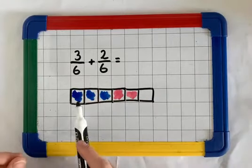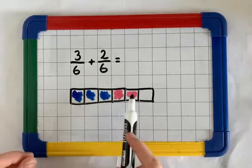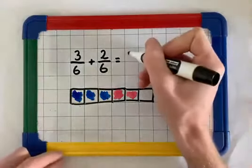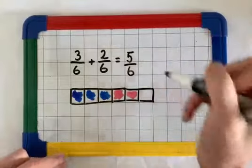You can see that we've got 1, 2, 3, 4, 5 sixths. So our answer would be 5 sixths.